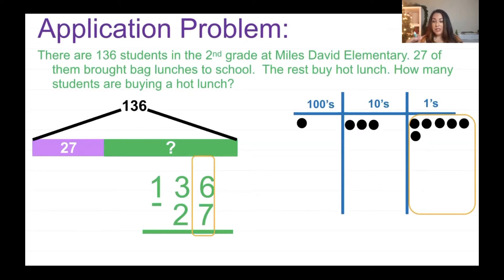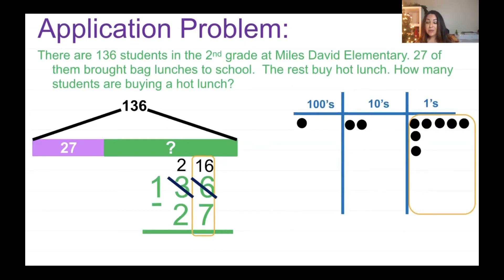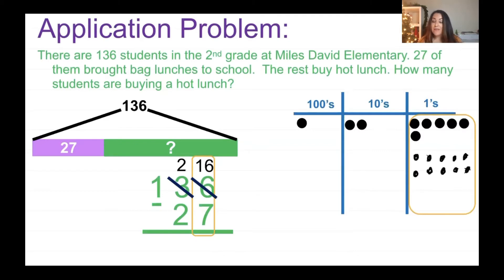Are there more on the top or more on the floor? There's more on the floor, so I'm going to go next door and get 10 more. I'm going to cross off my 3 — now I have 2 tens. After I do that, I also replace my 6 with 16. The 10 goes into the ones place and turns into 10 ones. Now I have my 10 ones drawn.